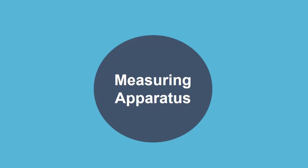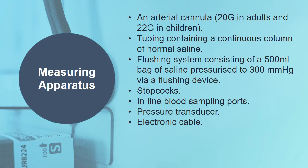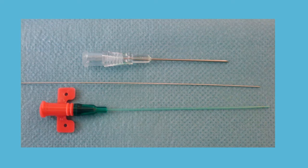For the measuring apparatus we need: a 20-gauge arterial cannula for adults and a 22-gauge cannula for children. We need non-compliant tubing — tubing that is rigid and resistant to bending — containing a column of normal saline. We need a flushing system consisting of a 500 mL bag of normal saline pressurized to 300 mmHg via a pressure infuser and flushing device. We also need stopcocks, in-line blood sampling ports, a transducer, and an electronic cable.